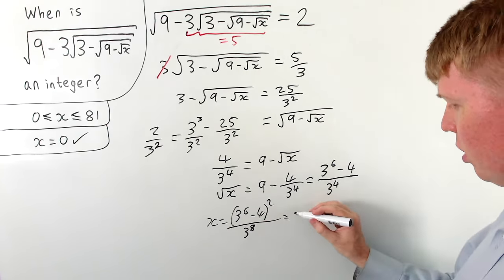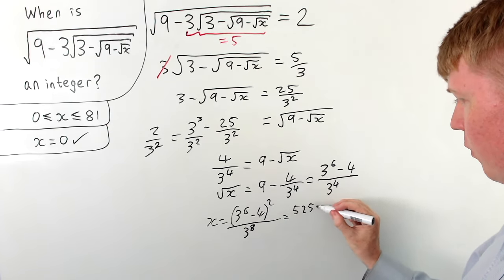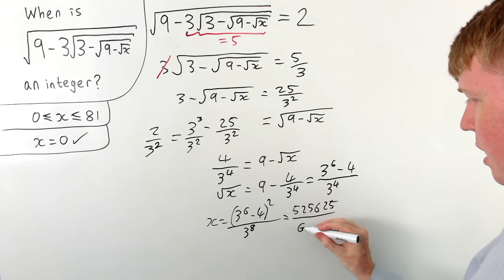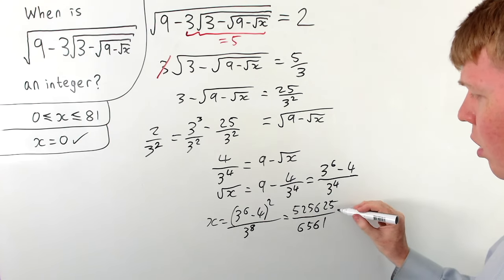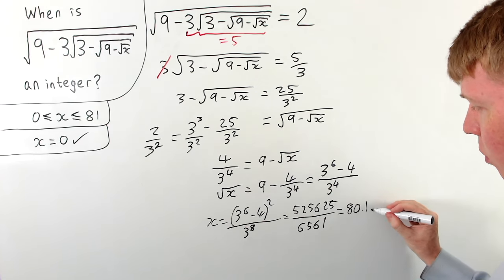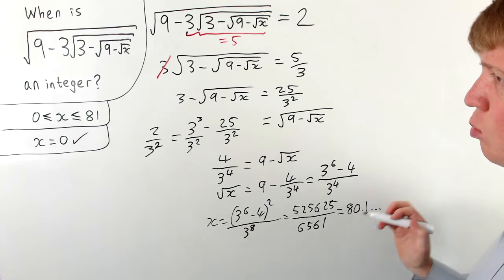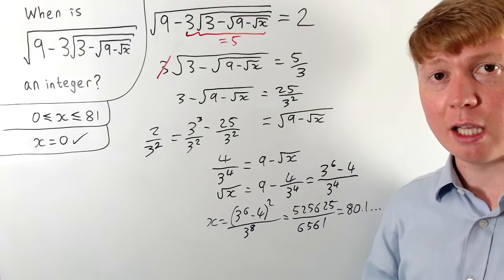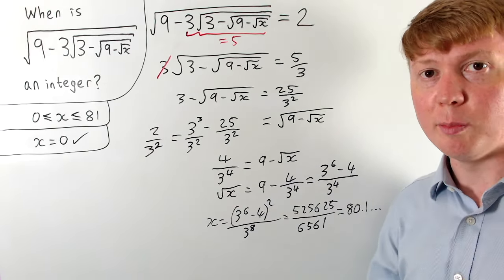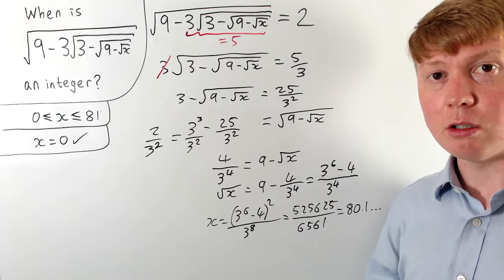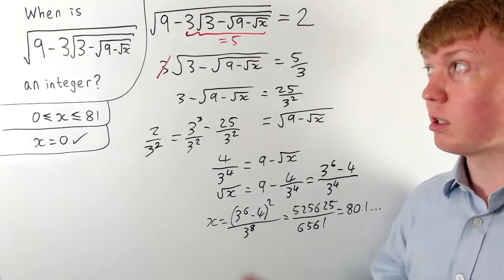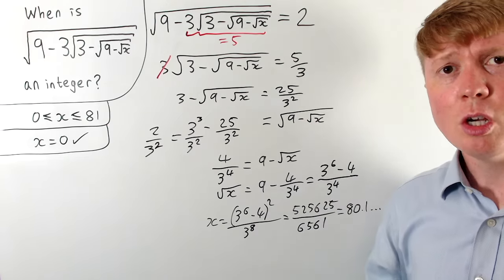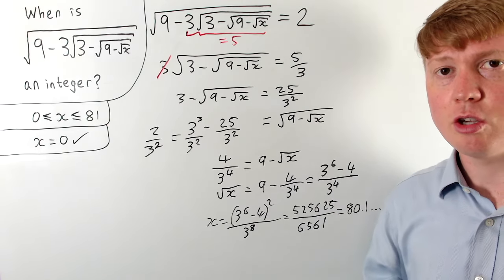As an actual number, this is 525,625 over 6561, which is around 80.1. This is within our permitted range of values for x, but we can see we're getting very close to our upper bound of 81, which might cause problems if we want to set our original expression equal to one or zero.